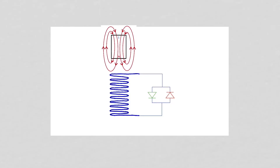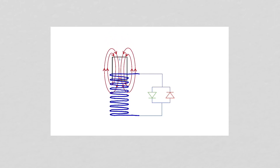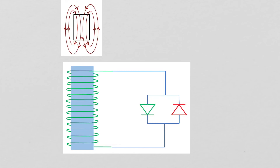As the magnet falls into the coil, there is an increase in magnetic flux pointing downward inside the coil. I've added a core so we can visualize the windings — of course there is no core so that the magnet can actually fall through the coil. Lenz's law tells us there will be an induced current to produce a magnetic flux pointing upward, which means the green LED will be forward biased and turned on, and the red LED will be reverse biased and turned off.